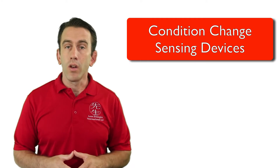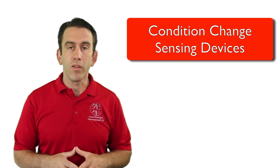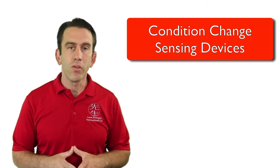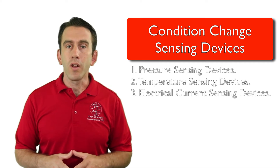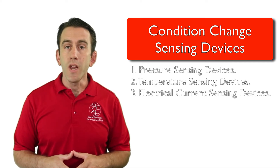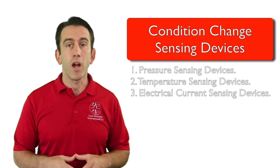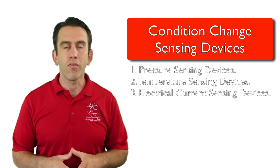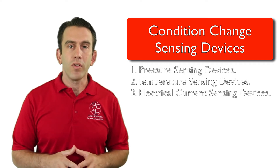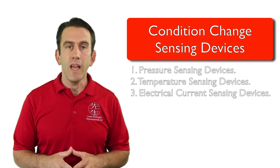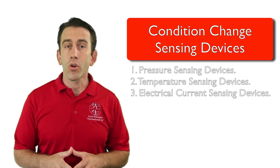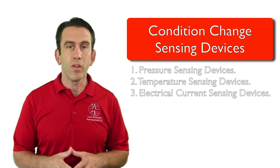There is one other type of sensing device that contains three subcategories — it is called condition or conditional change sensing devices. These devices are broken down into three categories that contain pressure sensing devices, temperature sensing devices, and electrical current sensing devices.